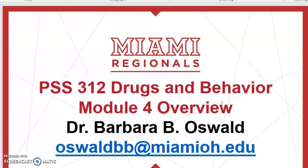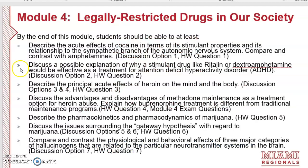Hello, this is Dr. Barbara Oswald and this is your Module 4 overview for PSS 312 Drugs and Behavior class. In Module 4 we're going to be talking about the legally restricted drugs in our society — the illegal drugs — including cocaine, the amphetamines, heroin, other opiates, marijuana, and hallucinogens.